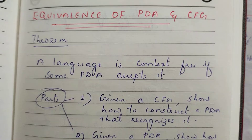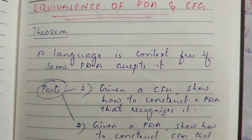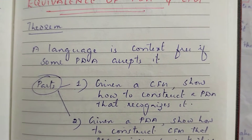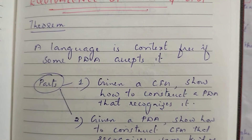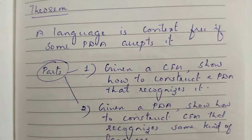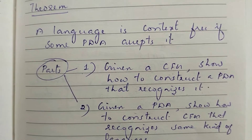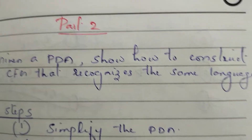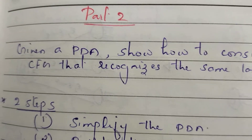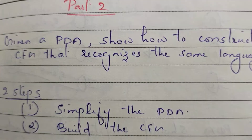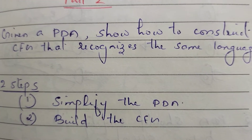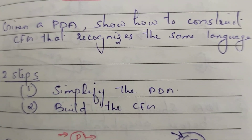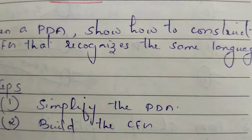In this video, we are going to construct a pushdown automaton. In the second part, we have done two steps. First, we are going to simplify the pushdown automaton. We are going to create a context-free grammar.